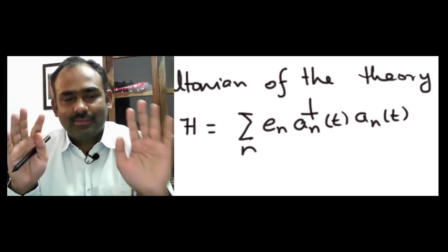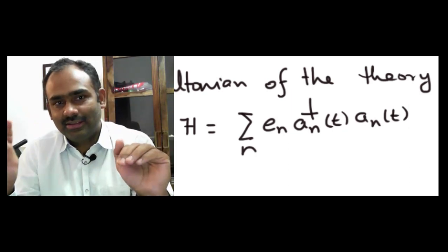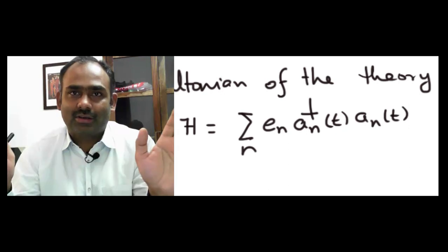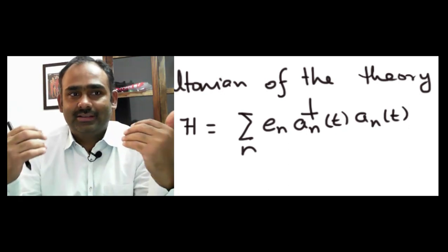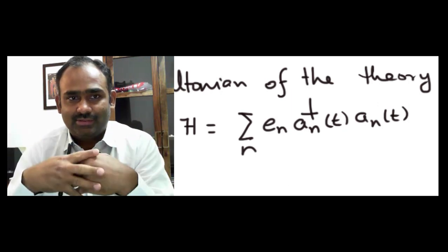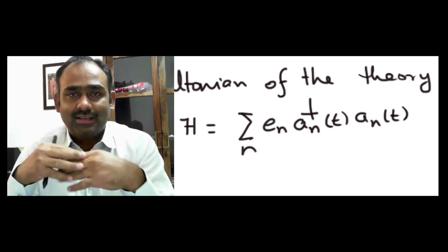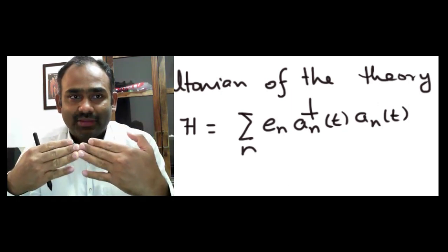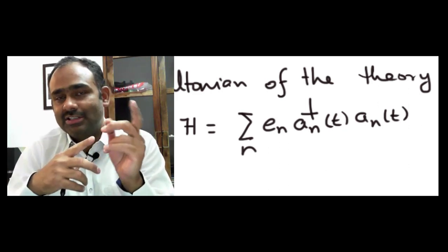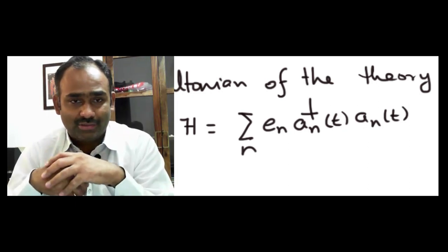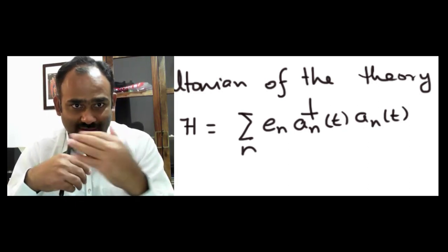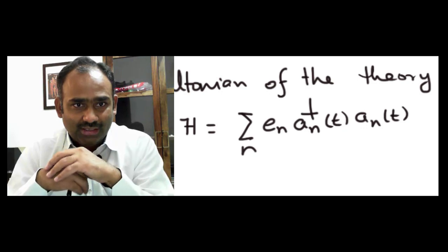The Hamiltonian of the quantum theory is H = Σ_n E_n a_n† a_n(t), where E_n are the eigenvalues of the single-particle Hamiltonian h. Each term E_n a_n† a_n is the Hamiltonian of a harmonic oscillator with frequency E_n. So our system is a collection of infinitely many harmonic oscillators. These oscillators do not interact — there are no cross terms between a_1 and a_2, so this is a completely free theory, despite the potential in the original Schrödinger equation. We will continue further in the next video.